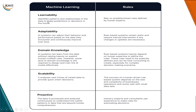The first advantage is learnability. In machine learning, the system automatically identifies patterns and relationships in the data for making predictions, whereas rule-based systems rely on rules defined by human experts. When I talk about adaptability, machine learning systems adjust their behavior and performance based on the data they encounter — even unseen data. But in rule-based systems, they remain static and require manual intervention when data changes; the rules must be updated accordingly. Regarding domain knowledge, AI systems can learn from data without relying heavily on explicit programming, whereas rule-based systems heavily depend on human expertise for every data change to make complex decisions, which can be time-consuming.